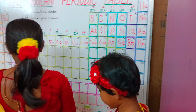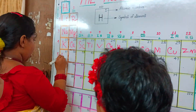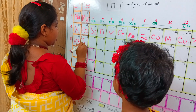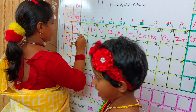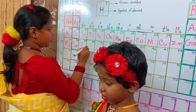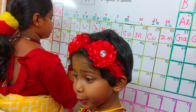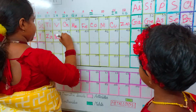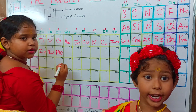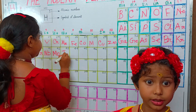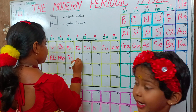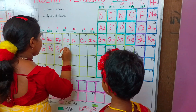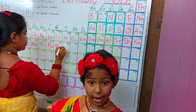37 rubidium, Rb. 38 strontium, Sr. 39 yttrium, Y. 40 zirconium, Zr. 41 niobium, Nb. 42 molybdenum, Mo. 43 technetium, Tc. 44 ruthenium, Ru. 45 rhodium, Rh. 46 palladium, Pd.